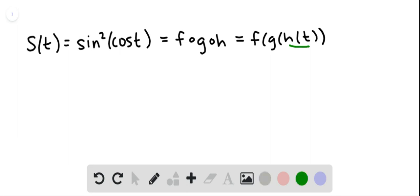And we can see from that that the innermost function is h. Now remember when you're looking at s of t and you see the squared symbol right here,